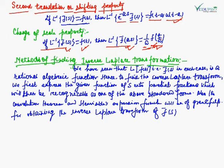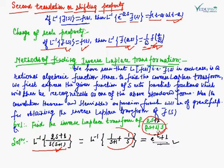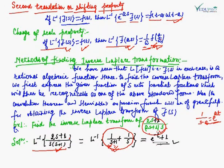Now we will discuss and solve some examples to clear any confusion. Find the inverse Laplace transform of (2S+1)/(S(S+1)). Solution: L⁻¹{(2S+1)/(S(S+1))}. Using partial fractions, we split this into smaller fractions. For 1/(S+1), by the standard formula, L⁻¹{1/(S−A)} = e^(AT), so L⁻¹{1/(S+1)} = e^(−t). And L⁻¹{1/S} = 1. Therefore, the inverse Laplace transform of (2S+1)/(S(S+1)) equals e^(−t) + 1.